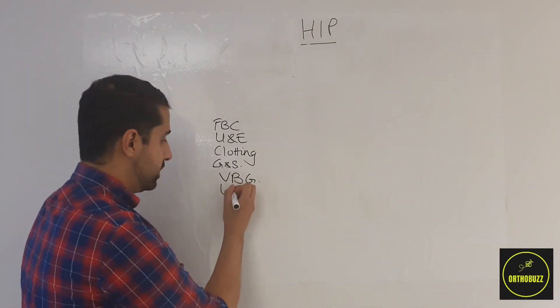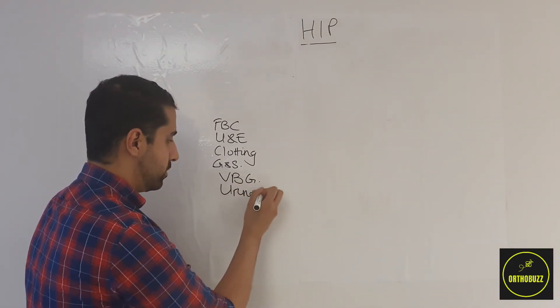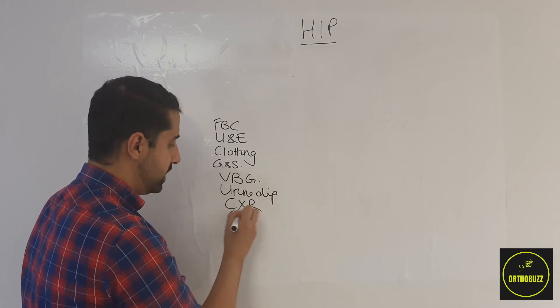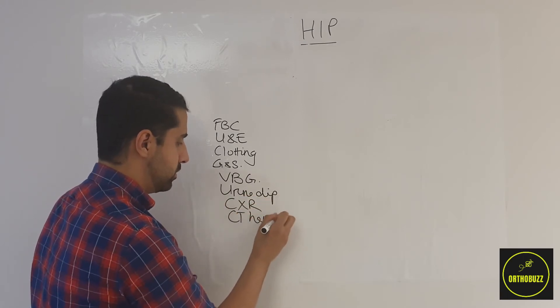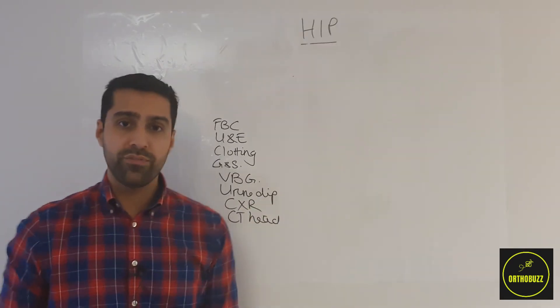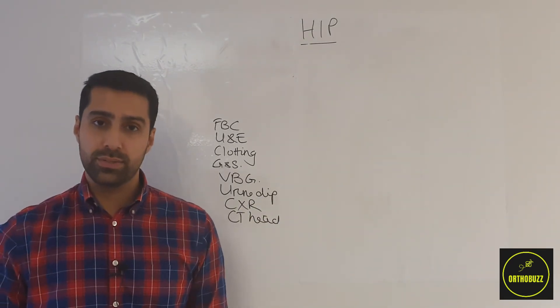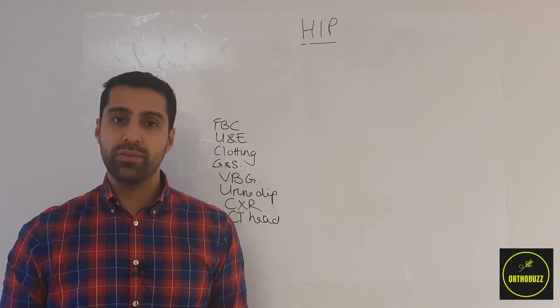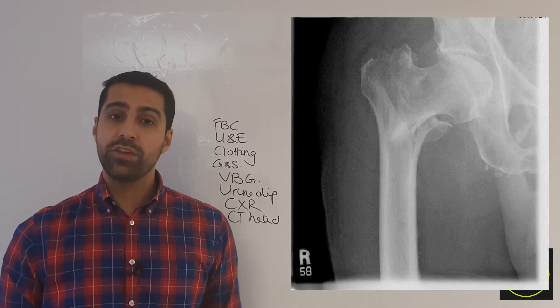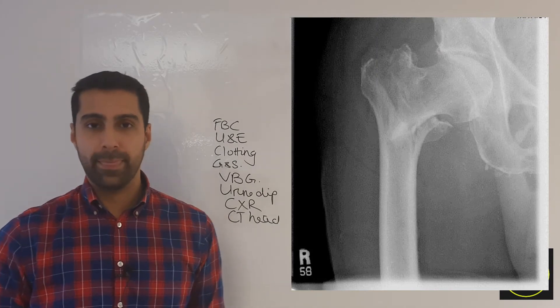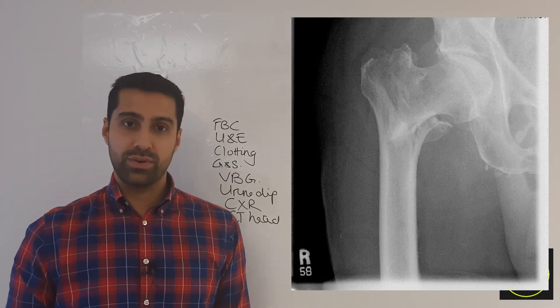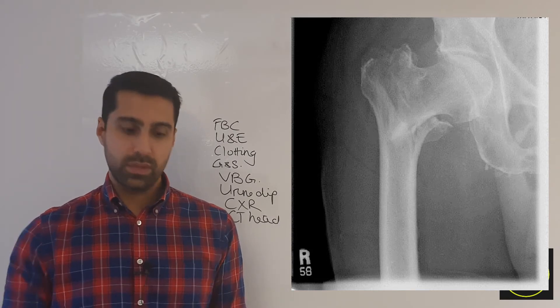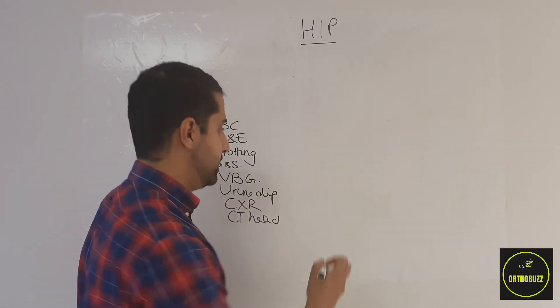Therefore we may want to consider doing a urine dip, a chest x-ray, a CT of the head before doing any other imaging investigations. After having done that, we're going to want to image the pelvis or the hip. Have a look at this x-ray and see if you can identify the abnormality. So this x-ray shows a right-sided neck of femur fracture. Let's have a think about this in greater detail.